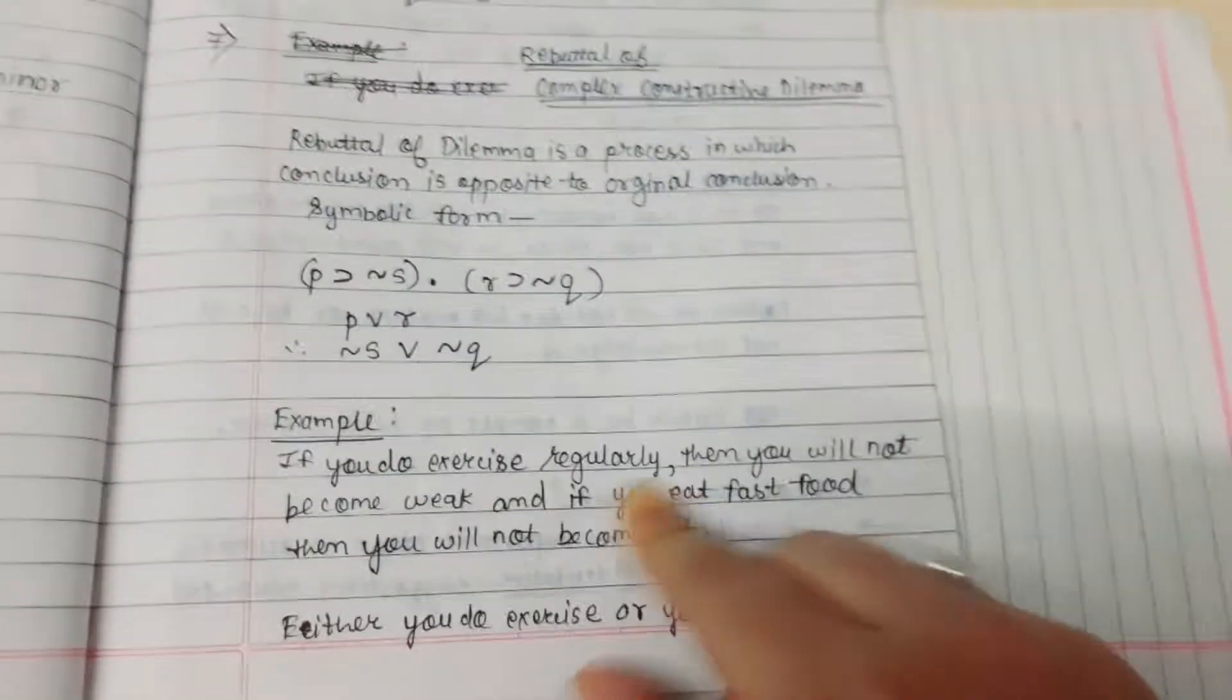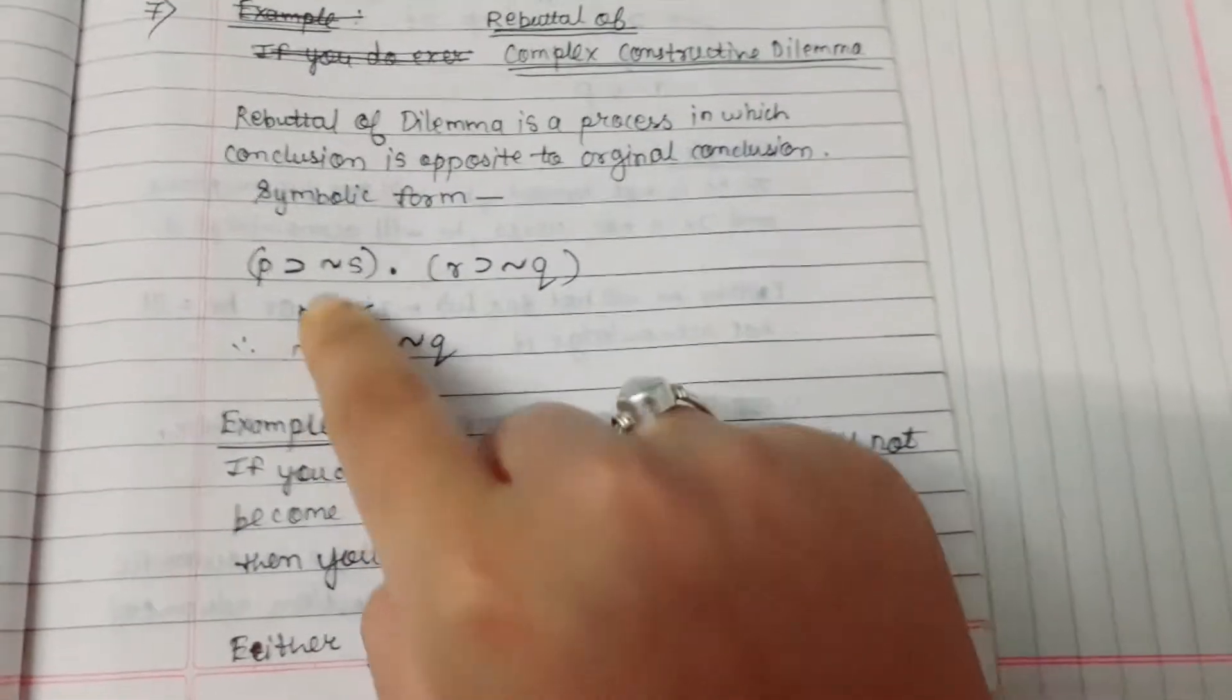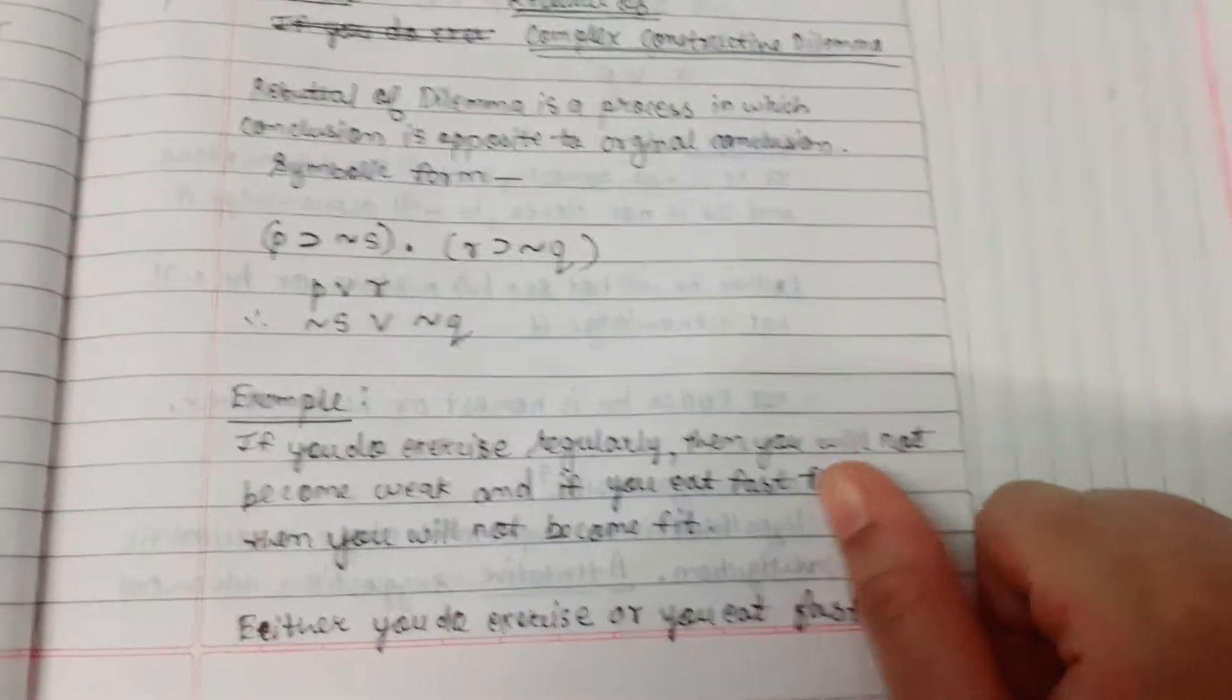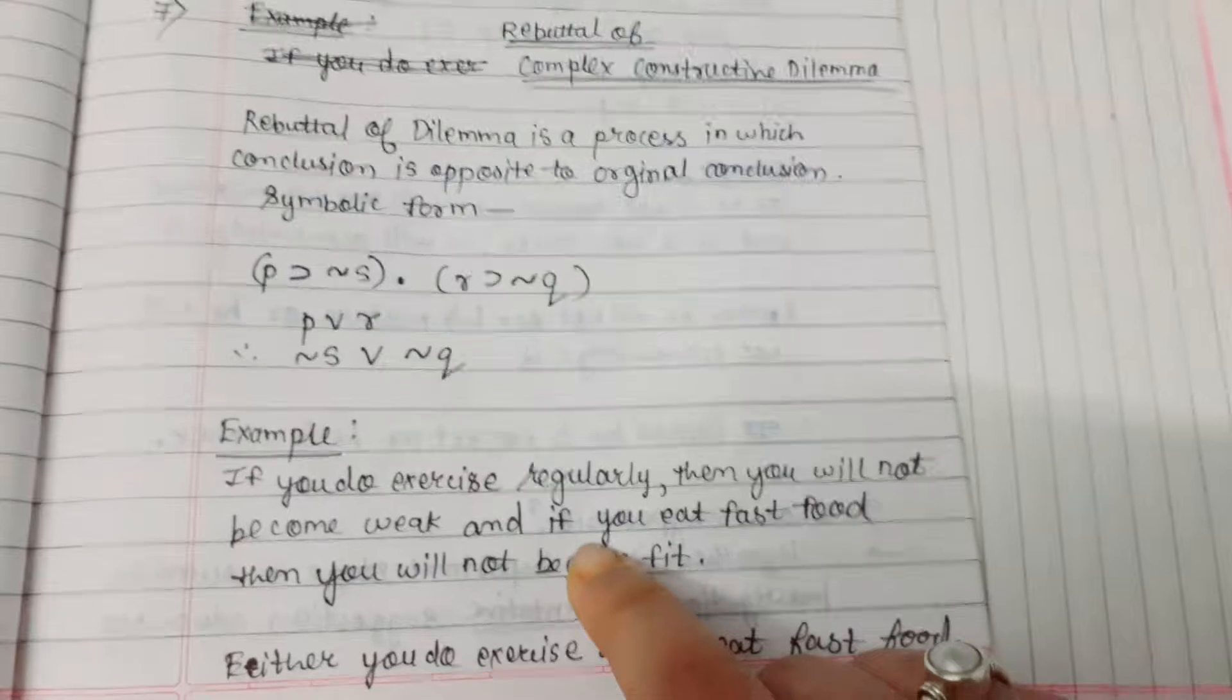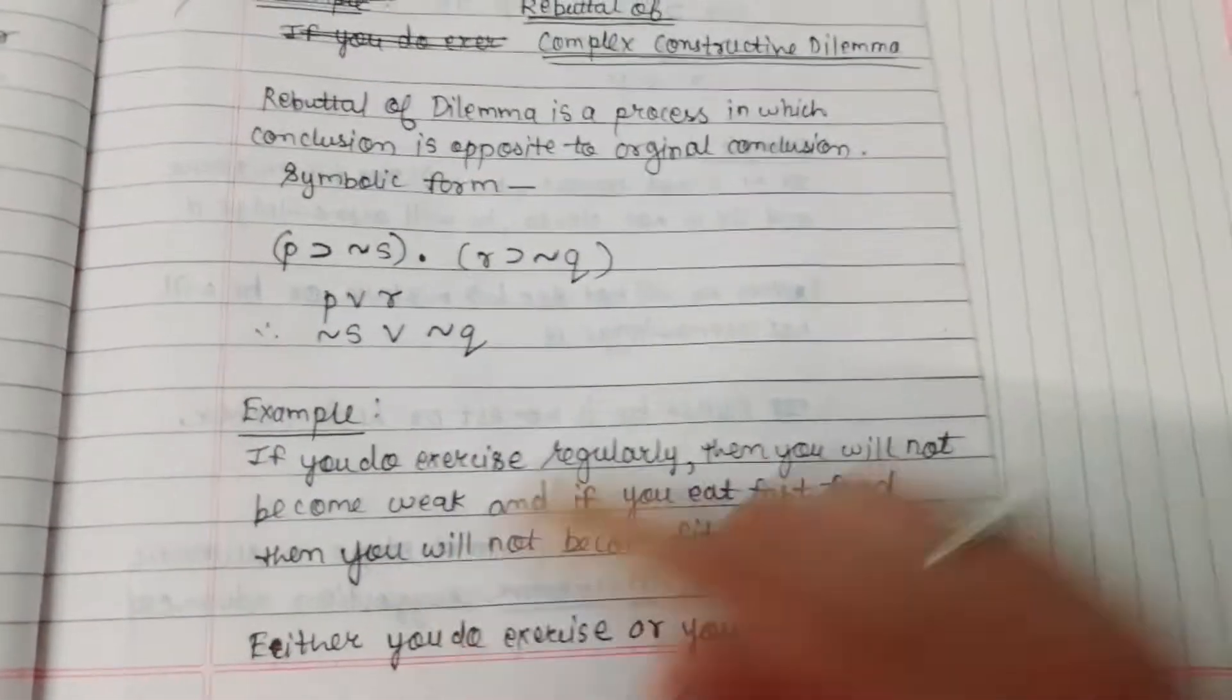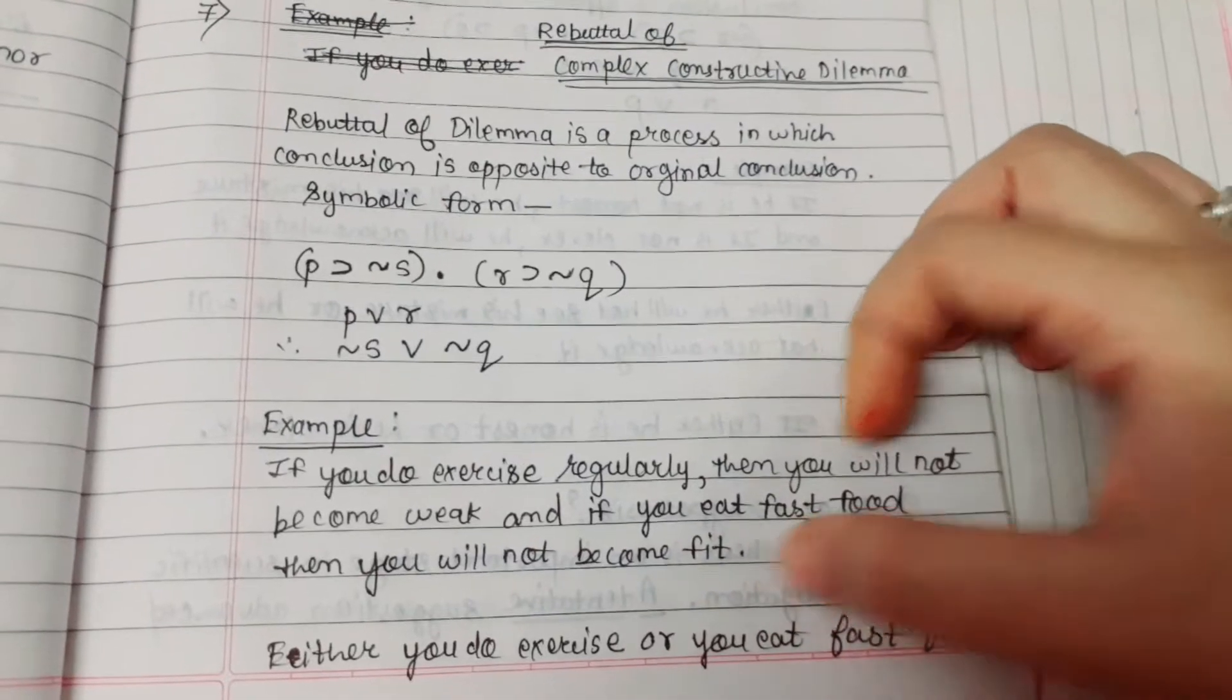If you do exercise regularly, this is P. This is the then symbol. And here negation S means not, so then you will not become weak. Dot means and. Now R means if you eat fast food, this is the then symbol. Now negation Q is there, so you will not become fit.